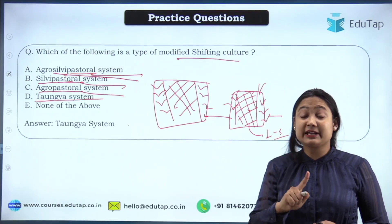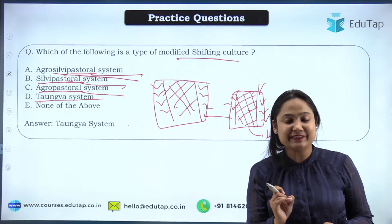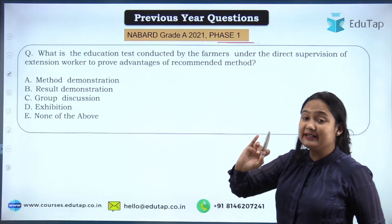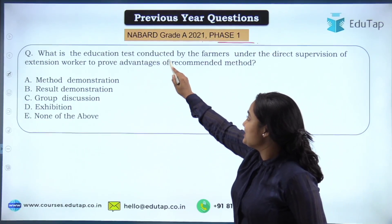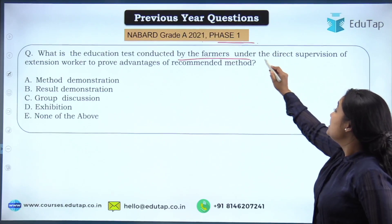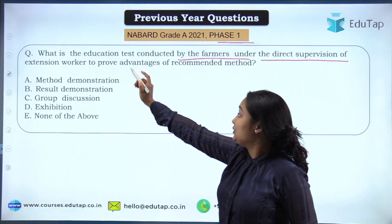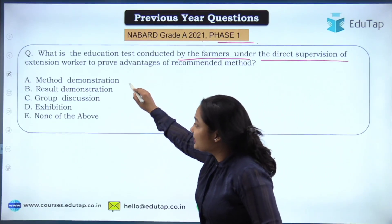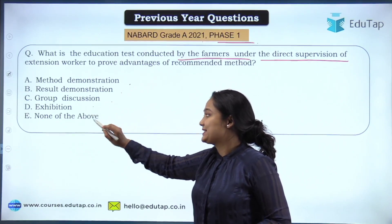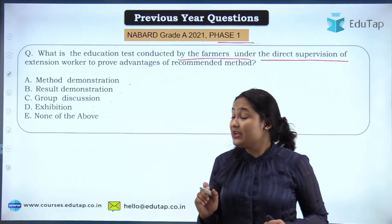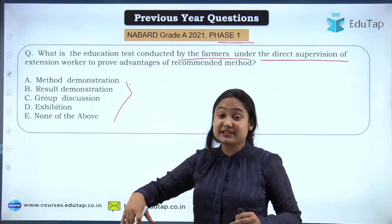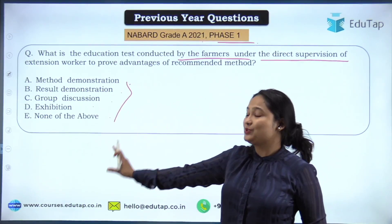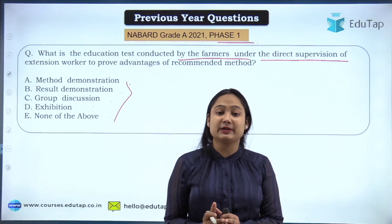Now let's look at the previous year question that NABARD has asked. In 2021 Phase 1, the question from agriculture extension was: what is the educational test conducted by the farmer under the direct supervision of an extension worker to prove the advantage of a recommended method? The options were: method demonstration, result demonstration, group discussion, exhibition, or none of the above.